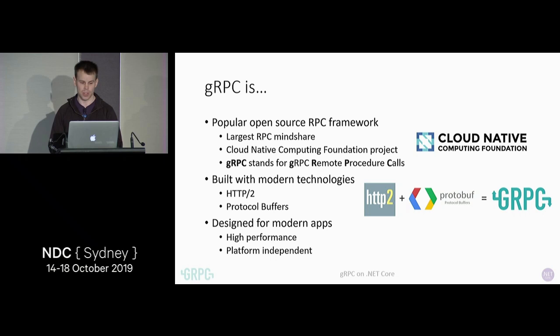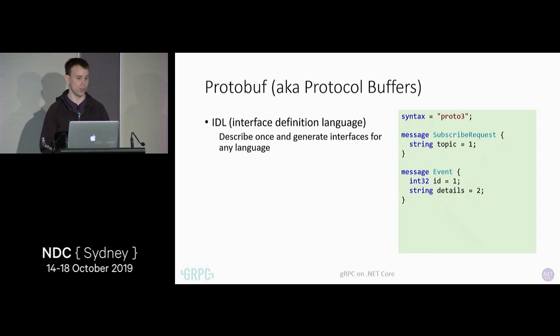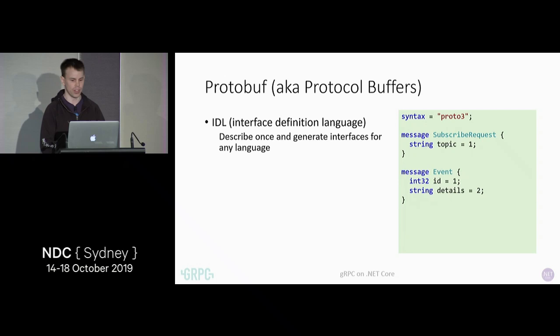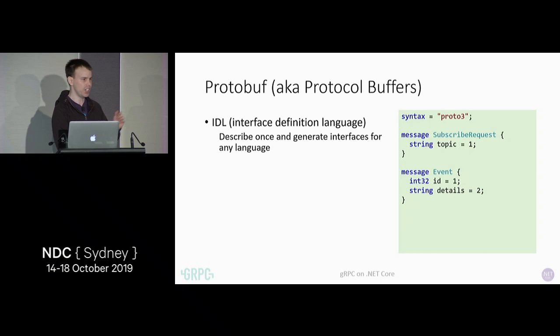Protobuf actually serves a number of purposes in gRPC. The first purpose is it serves as an interface definition language — a language-independent way of defining messages that your services are going to send and receive. That proto file is then shared between applications, so your contract needs to be known on both the server and the client. You'll notice that against each field — topic, ID, details — we're specifying a number. When protobuf sends a message, it doesn't send the entire field name. It's not a self-descriptive format; you need to have a contract on both sides.